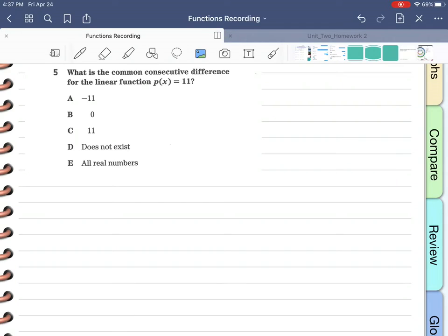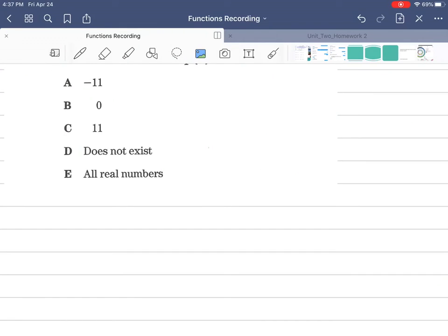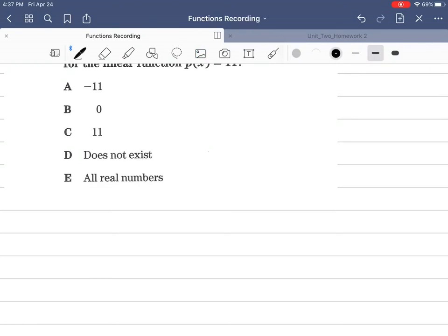So let's take a look at these answer choices. D is tempting, but D can't be right because linear functions, this is one of the traits of linear functions, all of them are common at the first level. So to say that it does not exist, if it didn't exist you wouldn't have a linear function. So I can eliminate D.